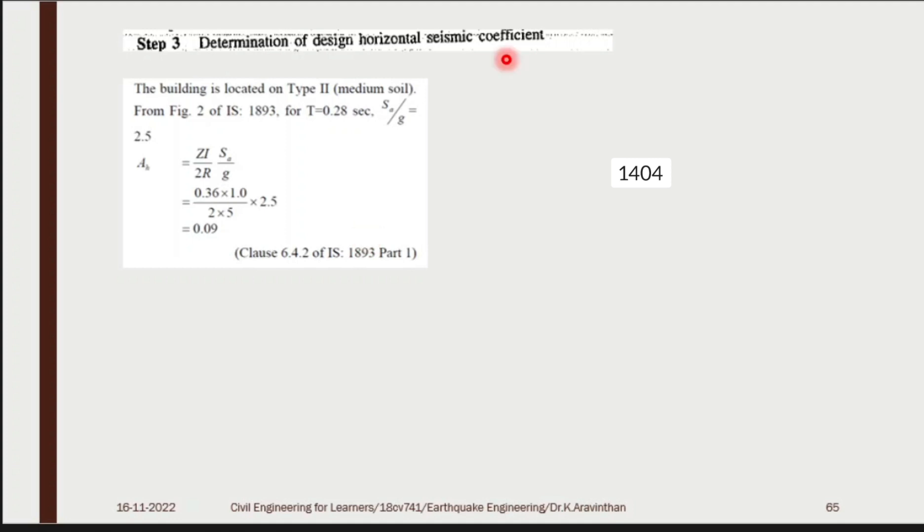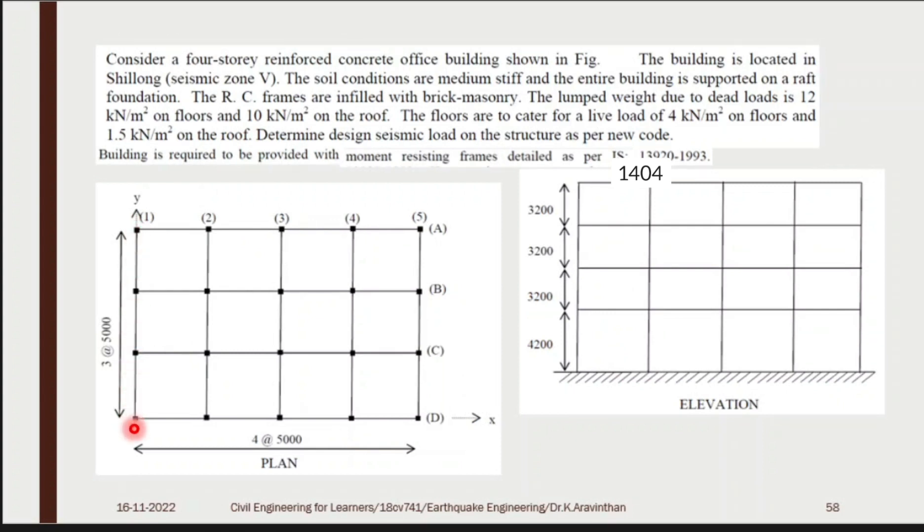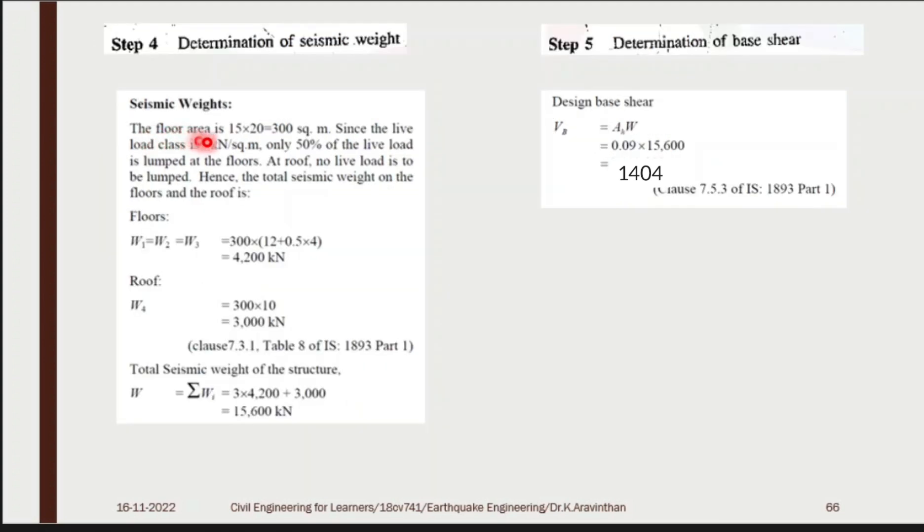Determination of seismic weight. Floor area: 15 meter at one side and other side is 20 meter. You have 15 meter at one side and 20 meter at other side. Multiply, you will be getting total area into the dead load, into the live load. The floor area is 300 m². And if you multiply into 4, you will be getting 1200. Only 50% of live load is lumped at the floor. At roof, no live load will be there. Only consider 50% of this.